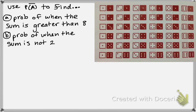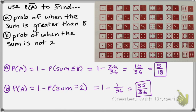All right, go ahead and pause the video. Using the same scenario, use the complement to find the probability of when the sum is greater than 8, and use the complement to find the probability of when the sum is not 2. For part A, the complement is when the sum is less than or equal to 8, which occurs 26 out of 36 times. Subtracting from 1 gives 10 over 36, or 5 over 18 — so the complement didn't save time here, but it's good practice. For part B, there's only one outcome where the sum is 2, so 1 minus 1/36 gives 35 over 36.